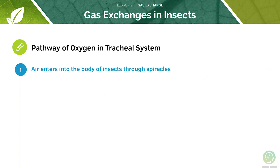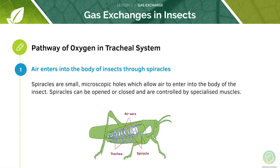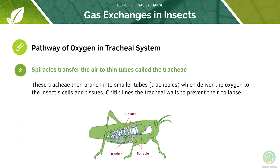Air enters the body of the insects through spiracles. Spiracles are small microscopic holes which allow air to enter into the body of the insect; they are opened or closed and controlled by specialised muscles. We can see the air sacs here. Spiracles transfer the air to thin tubes called the trachea. These trachea then branch into smaller tubes known as tracheoles, which deliver the oxygen to the cells and tissues of the insect. The walls of the trachea are lined with chitin to prevent them from collapsing.